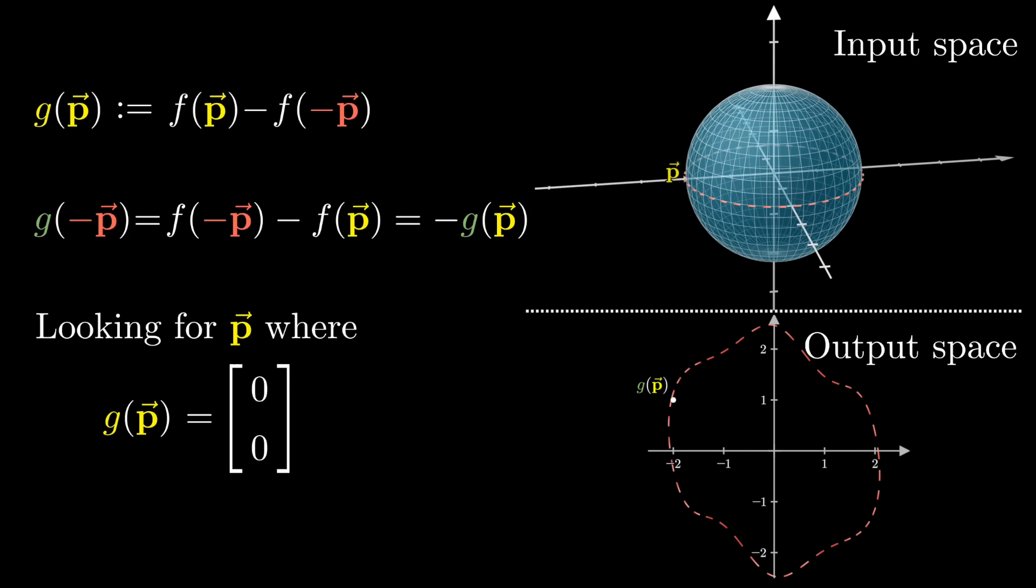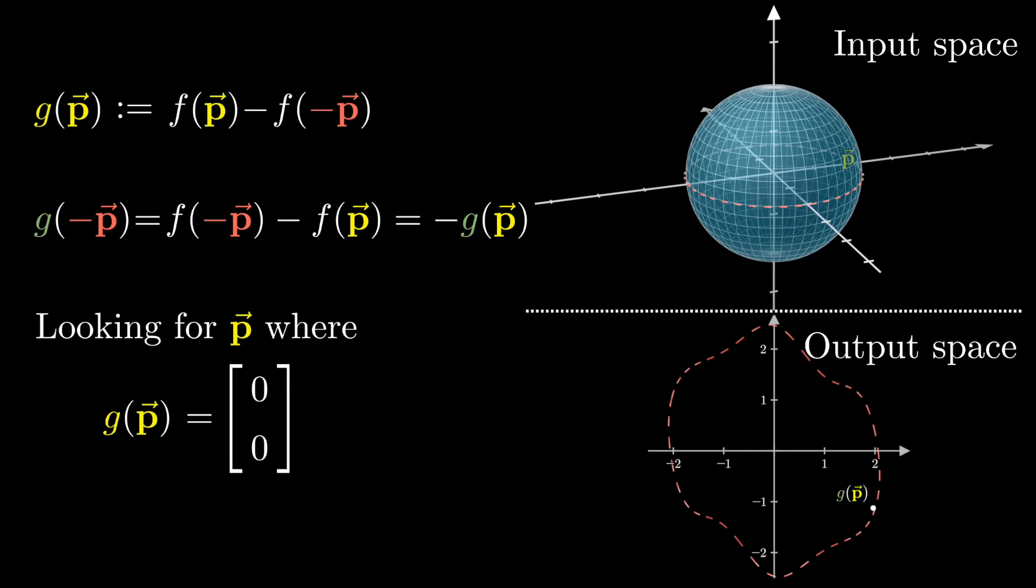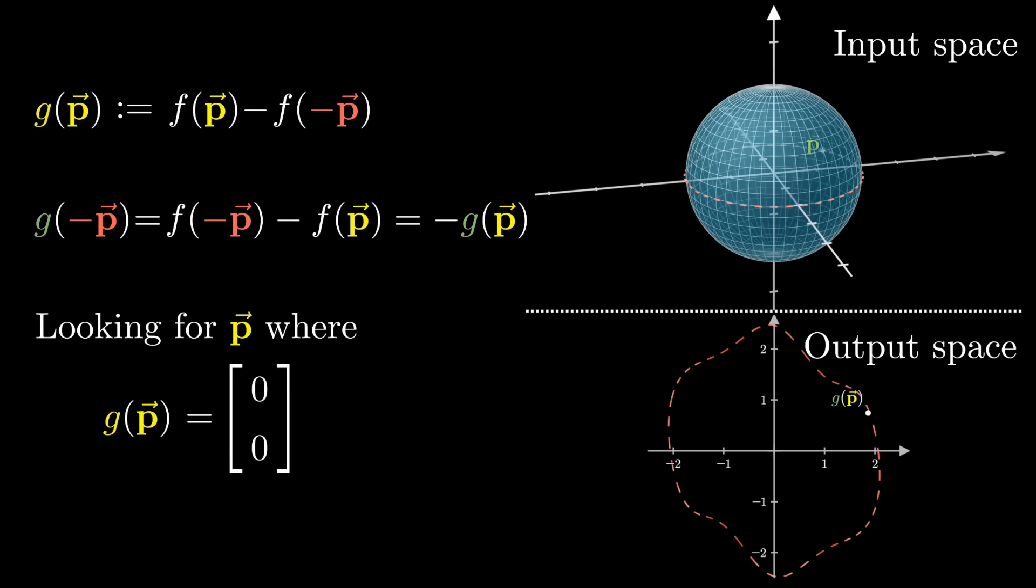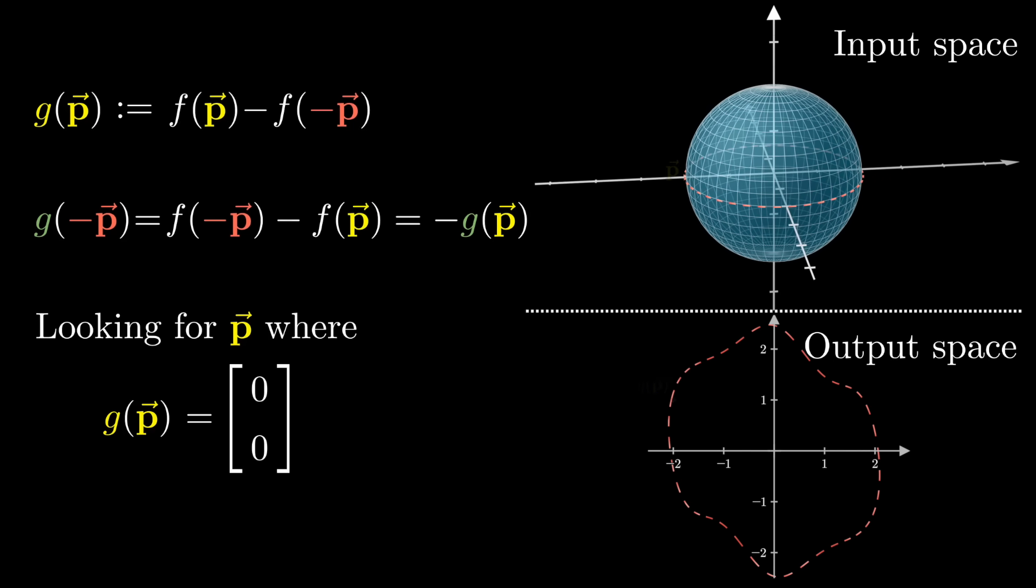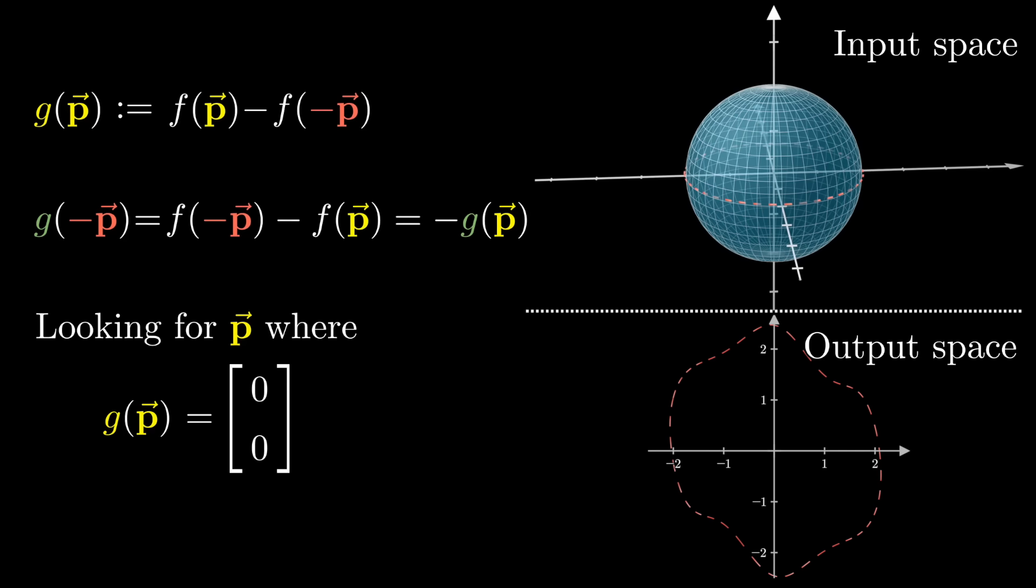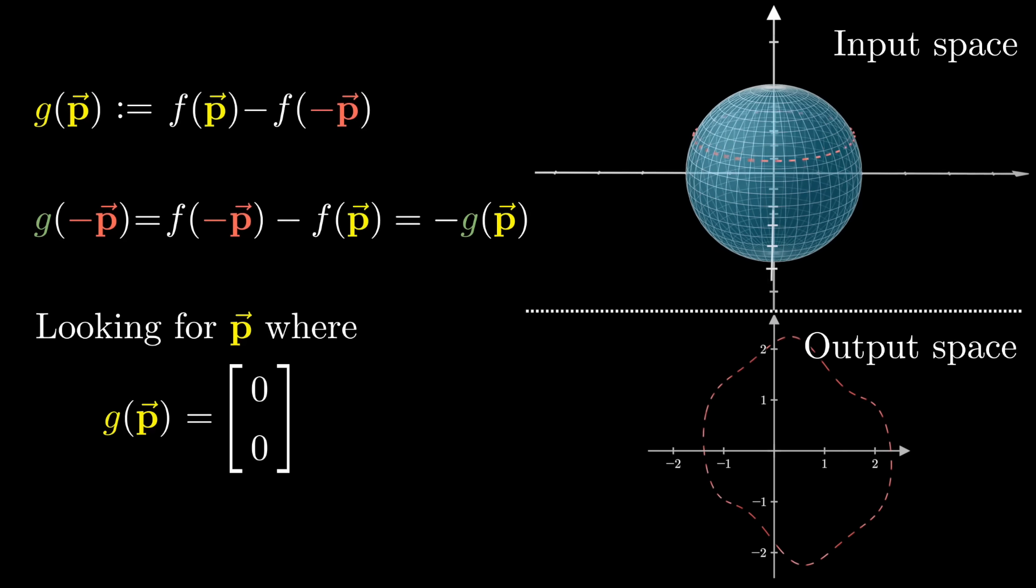Now, there's a slim possibility that one of these points happens to pass through the origin, in which case you've lucked out and we're done early. But otherwise, what we have here is a path that winds around the origin at least once. And now look at that path on the equator and imagine continuously deforming it up to the north pole, cinching that loop tight.